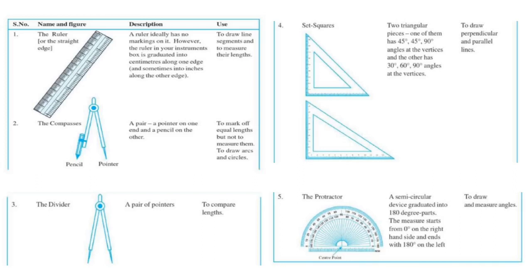And at last, we are going to learn about the protractor. Protractor is a semi-circular device that is divided into 180 degrees and is used to draw and measure angles.